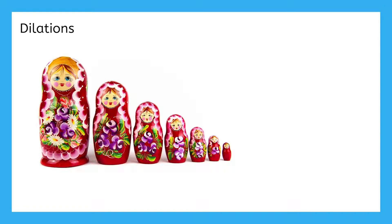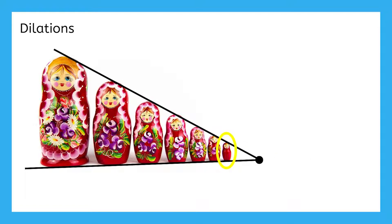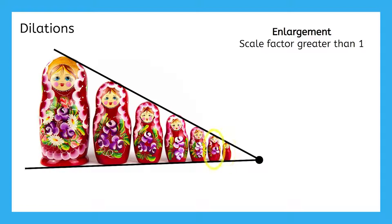Let's explore dilations more by creating a line connecting the tops of the dolls and another line joining their bases. Where these lines meet is called the center of dilation. So let's say that the smallest doll here is our pre-image. Then the rest of the dolls are an enlargement because they are bigger than the pre-image, and it will take a scale factor greater than 1 to create them.